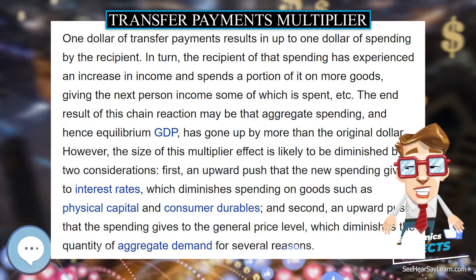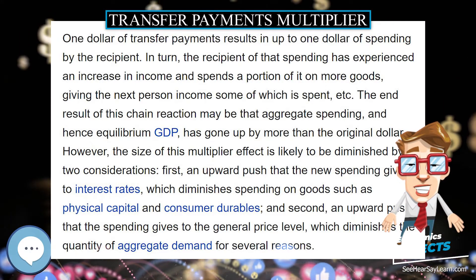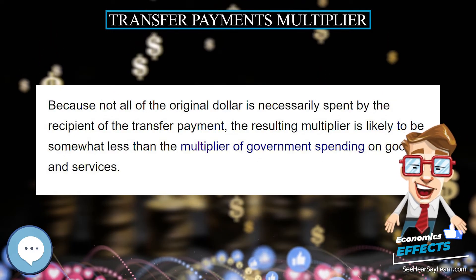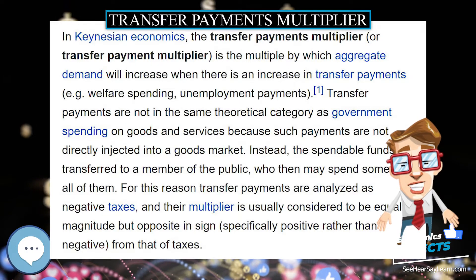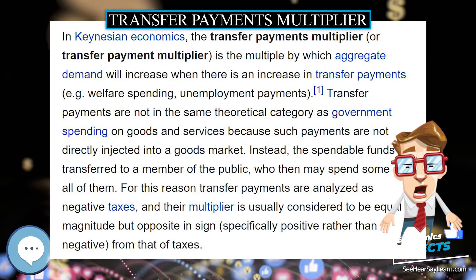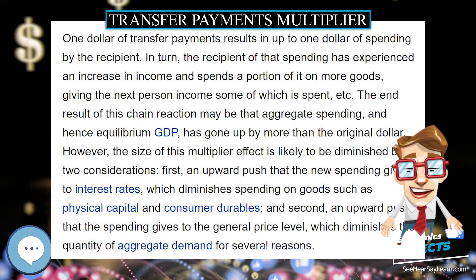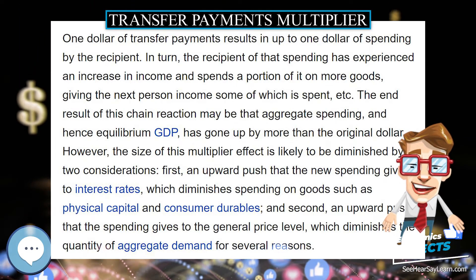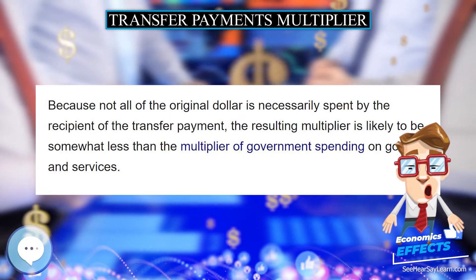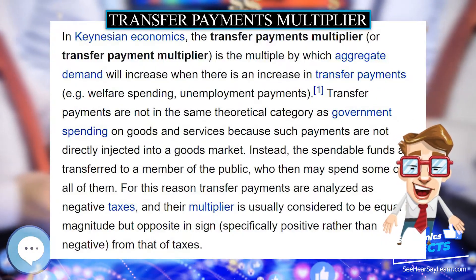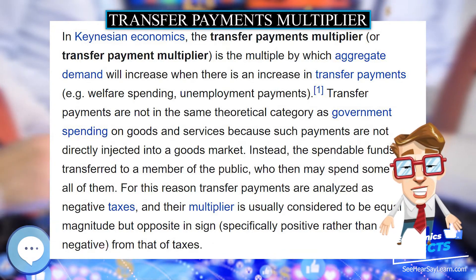Transfer payments are not in the same theoretical category as government spending on goods and services, because such payments are not directly injected into a goods market. Instead, the spendable funds are transferred to a member of the public, who then may spend some or all of them. For this reason, transfer payments are analysed as negative taxes, and their multiplier is usually considered to be equal in magnitude but opposite in sign — specifically positive rather than negative — from that of taxes.